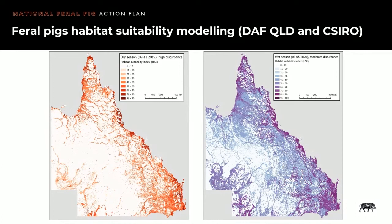What this highlights is that four complementary resource requirements are needed for sustained feral pig breeding: food, water, protection from heat and protection from disturbance.